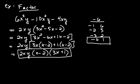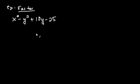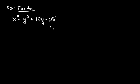Let's try another complicated factoring problem. We're back to a four-term situation. You might try grouping two and two, but the problem with that is: the first pair gives x squared minus y squared, which factors as x plus y times x minus y, and the last pair factors as five times two y minus five. But x plus y and x minus y share no common factors with five times two y minus five, so factoring by grouping two and two doesn't work here.